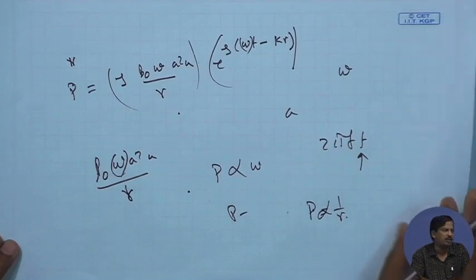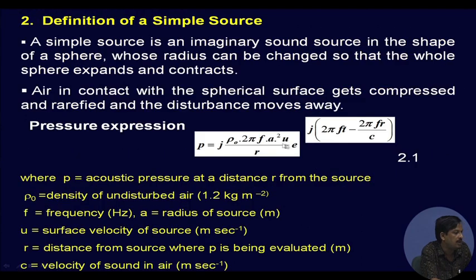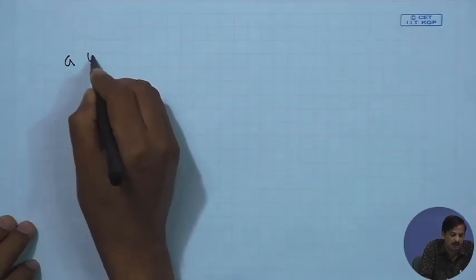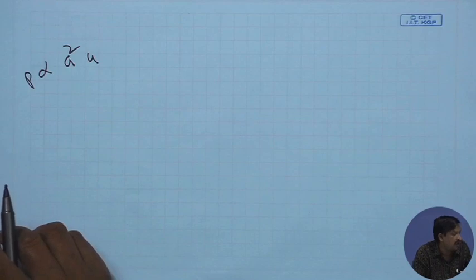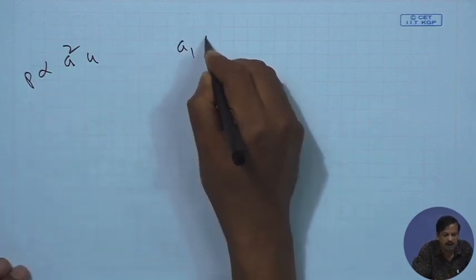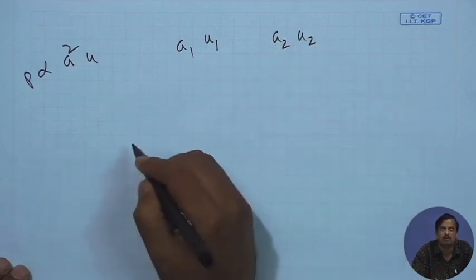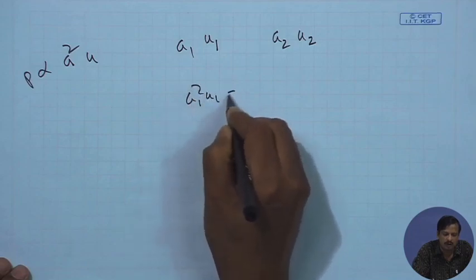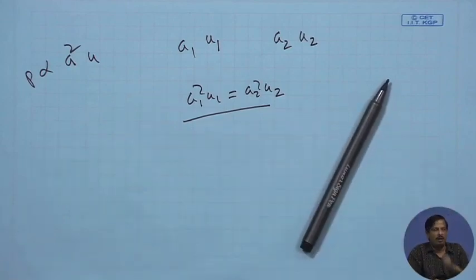For the sphere, the frequency response is a linear function of frequency: p is proportional to ω (which is 2πf), so if you double the frequency the pressure also doubles. Also p is inversely proportional to 1/r, which is spherical wave propagation consistent with the inverse square law. The radiated pressure from a source of radius a depends on a²·u, so if two sources satisfy a₁²·u₁ = a₂²·u₂ they produce the same pressure.